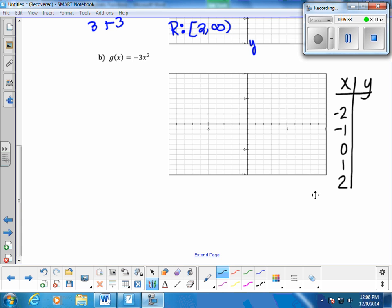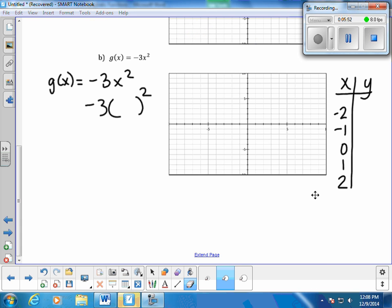So if my function, g(x), is negative 3x squared, everywhere there is an x, I'm going to put a parenthesis, and then we're going to start substituting. I'm going to start with x equals negative 2. That means everywhere there's an x, put a negative 2. Negative 2 squared is positive 4.